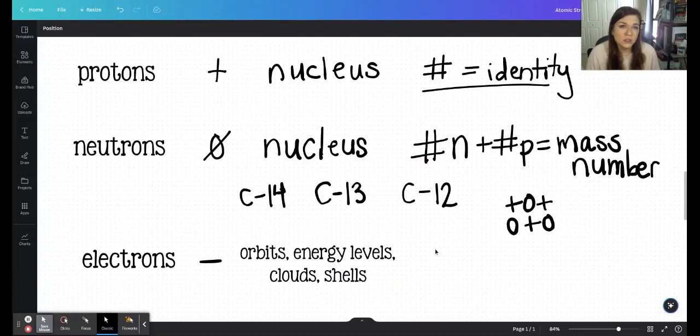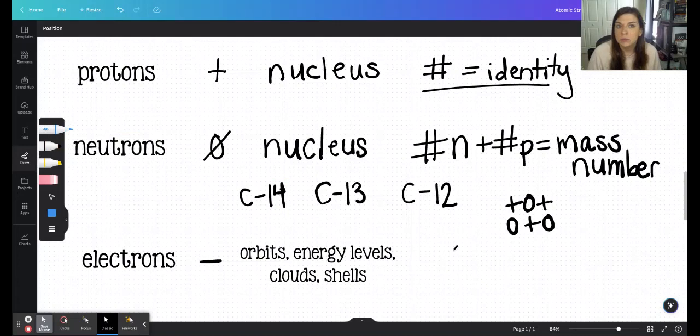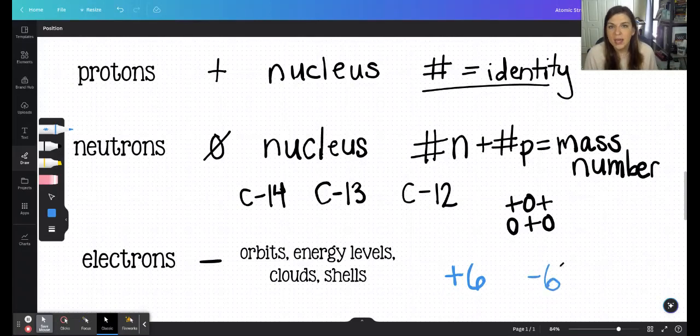And the total number of electrons in atoms is going to be equal to the total number of protons. Atoms are electrically neutral. So if we had, let's say, carbon, we would have six protons. In an atom of carbon, we would also have six electrons. And that's because the positives need to cancel out the negatives to give us an overall neutral charge for the atom.